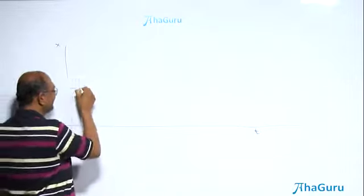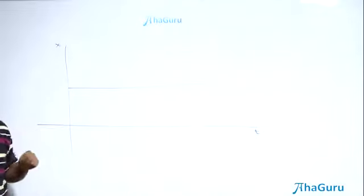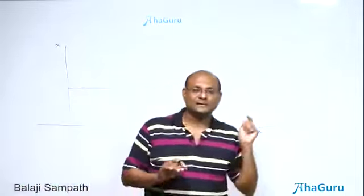Suppose I had a graph, an x-t graph, which looks like that - a flat straight line. What does that mean? The object is at rest.